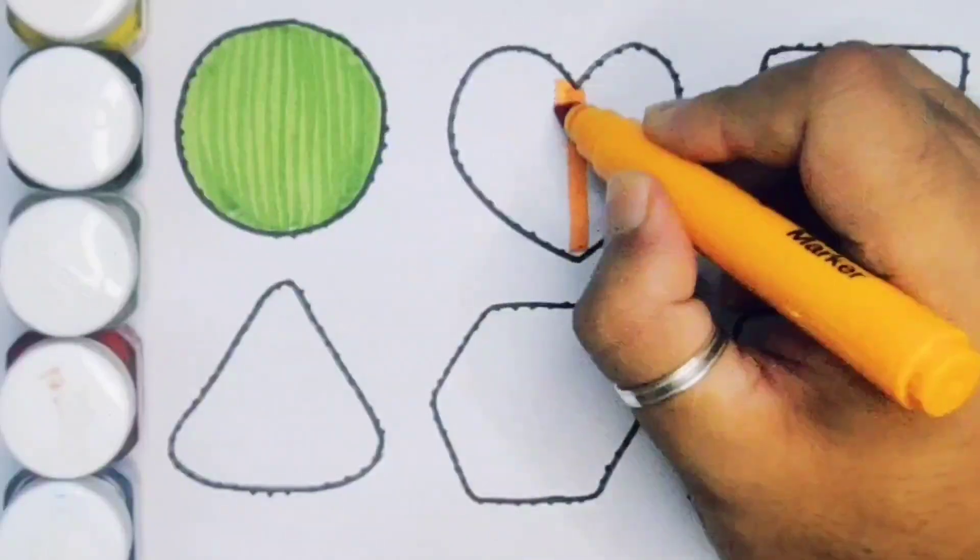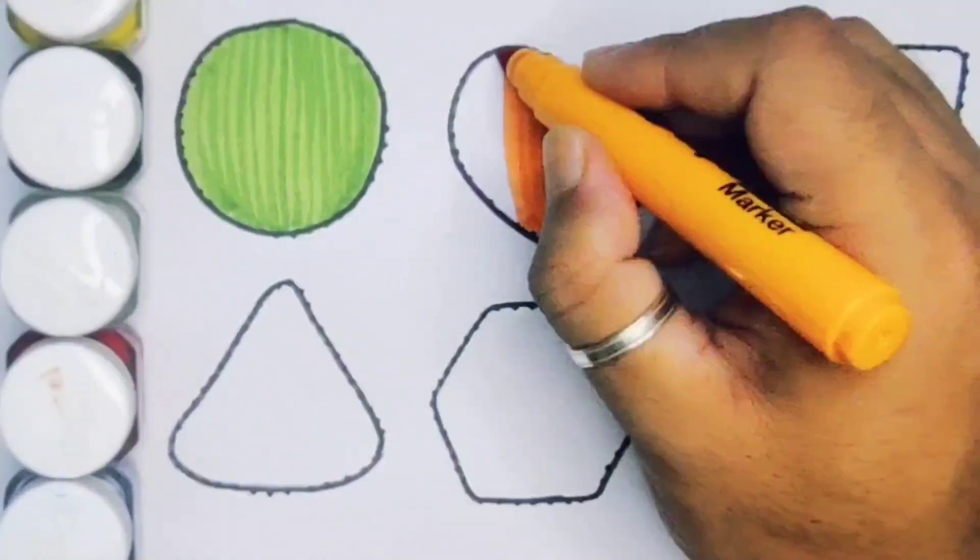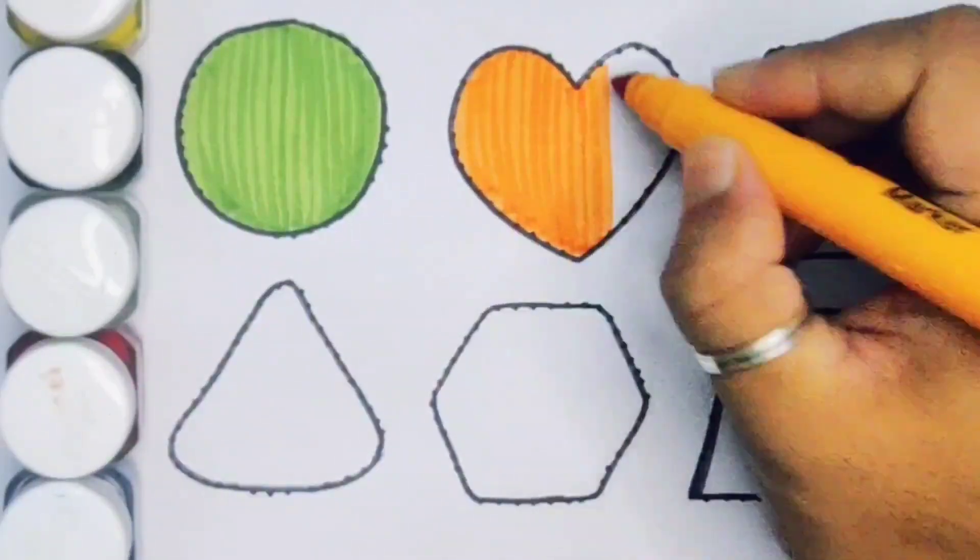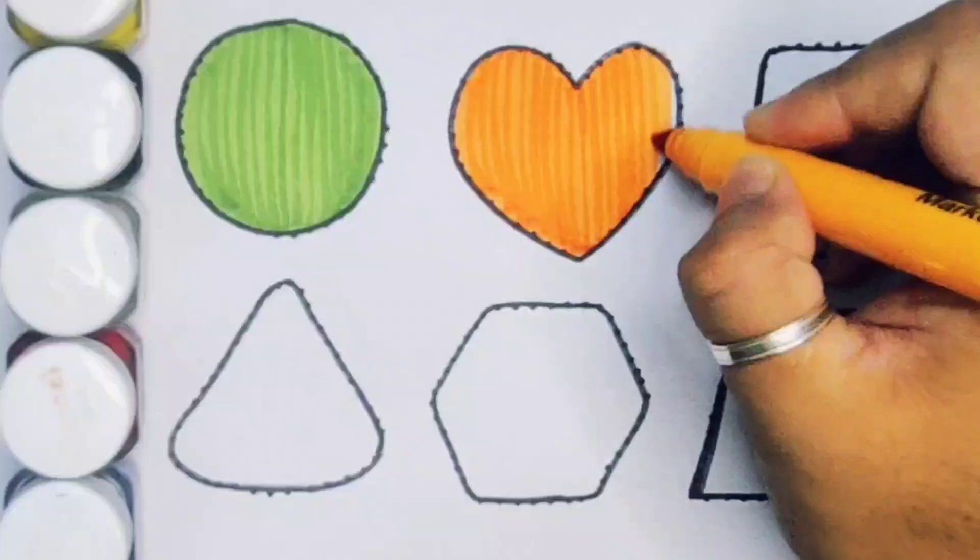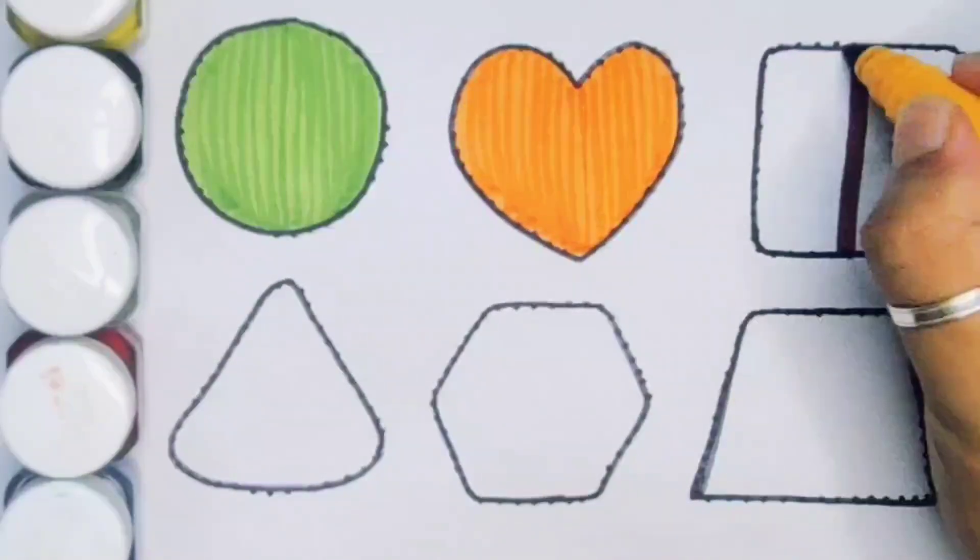Next, orange color, heart. Next, chocolate color, square.